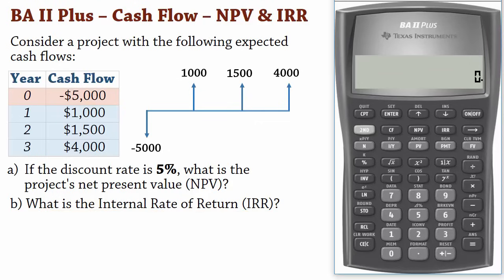To begin, press the CF button to launch you into the cash flow spreadsheet. Next, press 2nd clear work to clear previously done work.